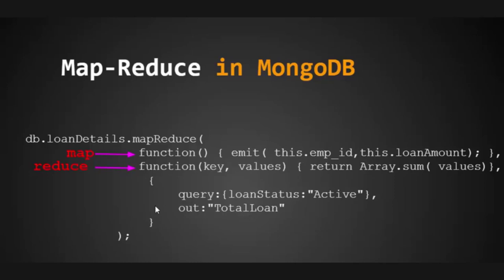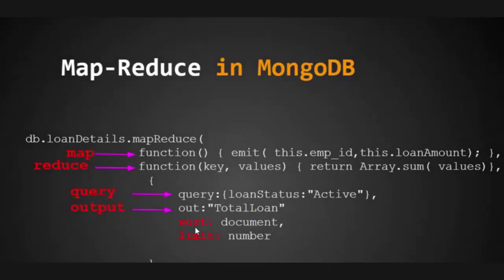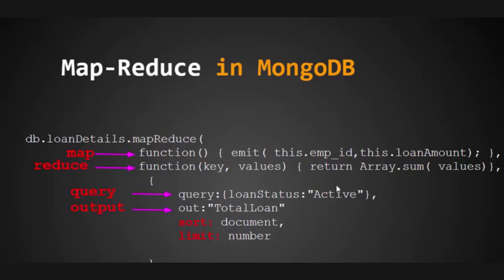The output will be stored in a collection called 'total loan'. Apart from the query and output, we can also provide sort and limit. Sort takes a document specifying ascending or descending order. Limit is a number that restricts how many results are returned — useful when you have thousands of results and only want, say, the first hundred.